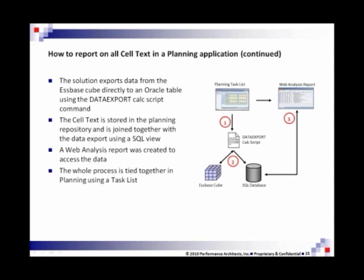The Celtex is stored in the Planning repository, actually in two tables — I believe it's Celtex and Celtex Detail, something to that effect. If you have access to that repository, you can pull out all the Celtex related to various intersections in Essbase. So in bullet one here, we have the data that lives in Essbase, now in a relational table. In part two, we go into the repository — or create a view into the repository — that shows you the comment along with the intersection that the comment applies to. Get the comment, get the intersection, and marry those two together. Now you have the data and all the Celtex joined together in one SQL view or table.